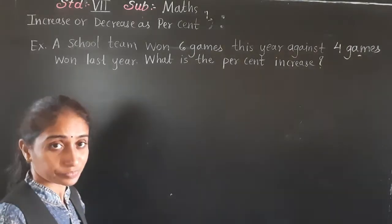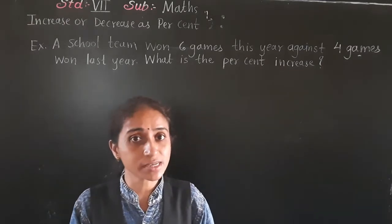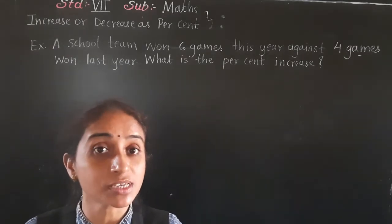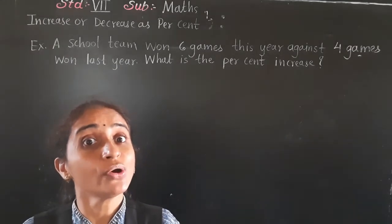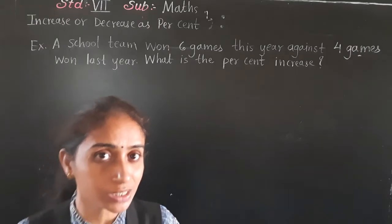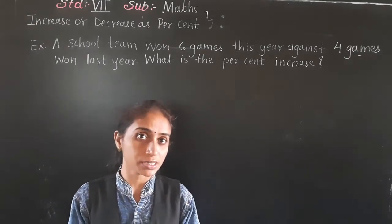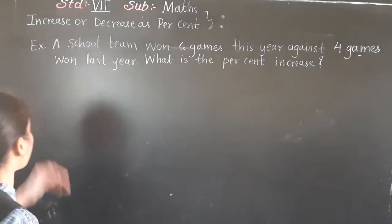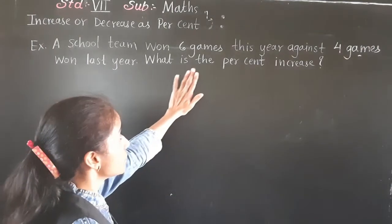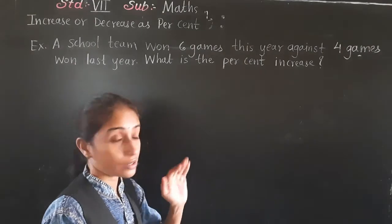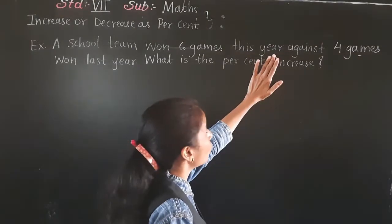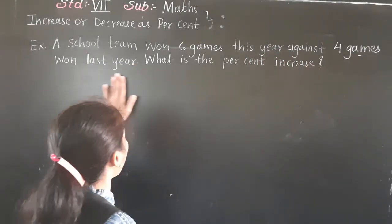See here one example. We need to see what is an increase and what is a decrease — increase the population, decrease the population. Suppose it is given in a number, but now we need to know in percent. Let's see this example: a school team won 6 games this year, and won 4 games last year.